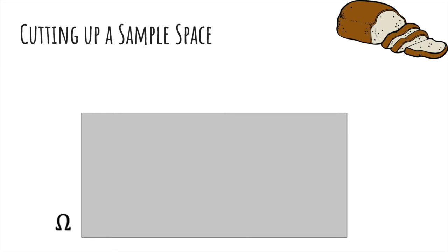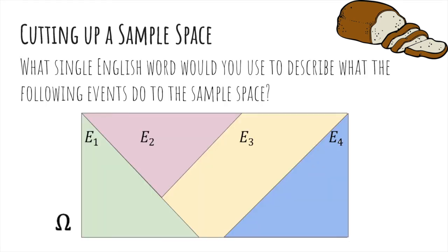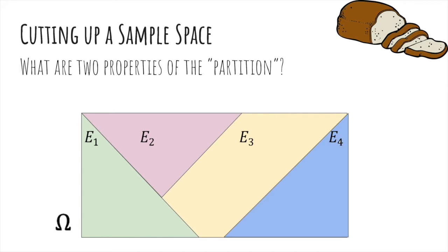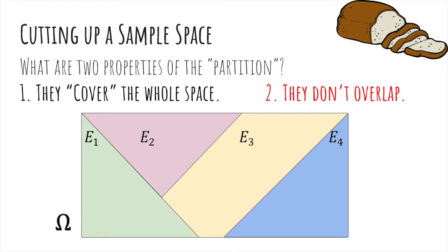Now we'll talk about cutting up a sample space. Here are four events. What single English word would you use to describe what the following events do to the sample space? I would choose the word partition. What are the two properties of this partition? One is that they cover the entire space, and the second is that they don't overlap at all.